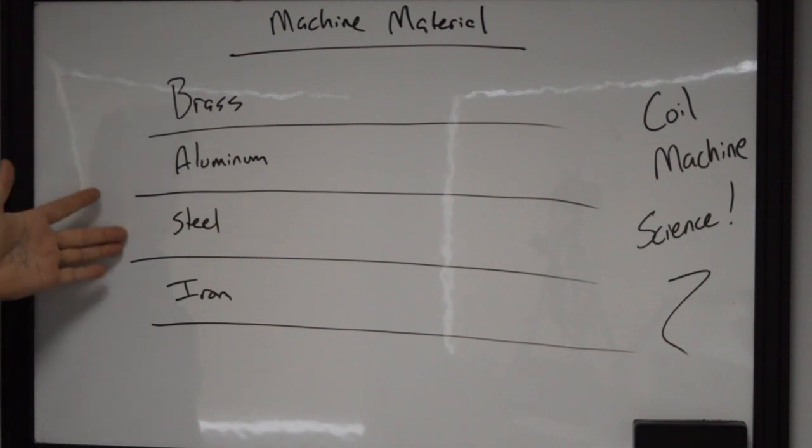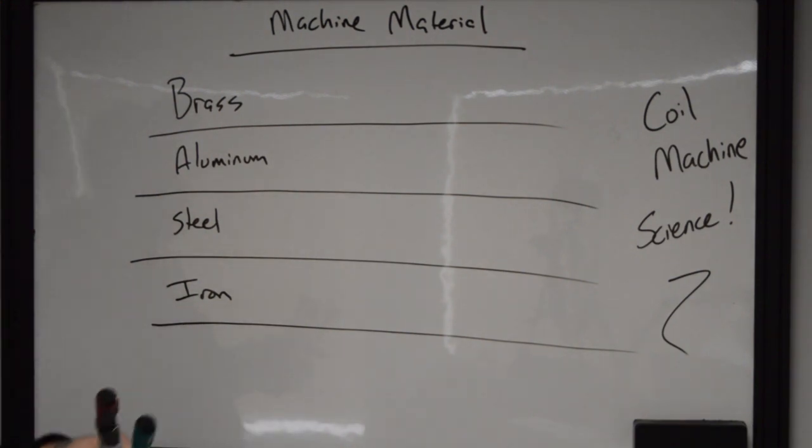Brass, aluminum, steel, and iron. Yeah, it's pretty simple, right? They're all hard. They're metals. But each one of them is going to have a different performance characteristic when they're actually using the coil machine. Now, the first one we're going to go down to is the weight.